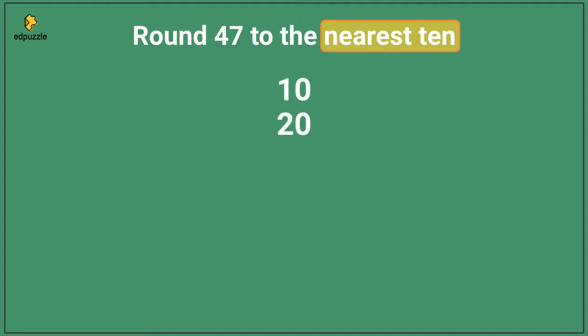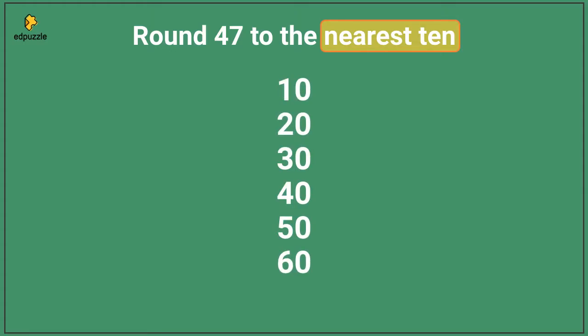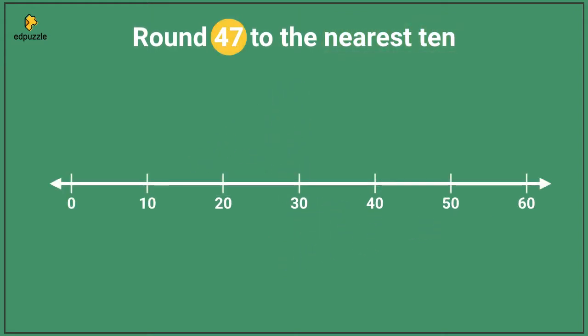Ten, twenty, thirty, forty, fifty, sixty. We're going to pick which of these is closest to our number. I'm going to think about these numbers on a number line. Then I can figure out where forty-seven is.